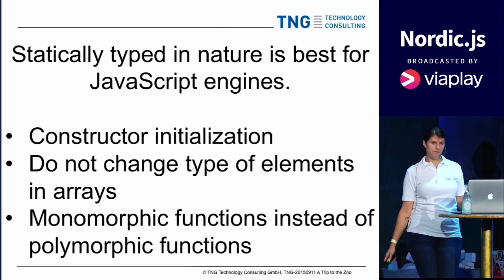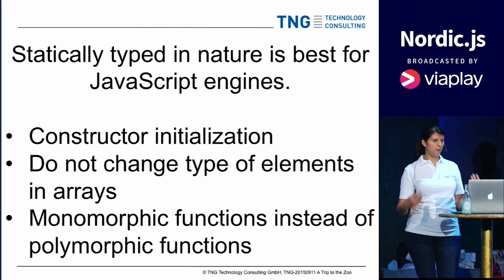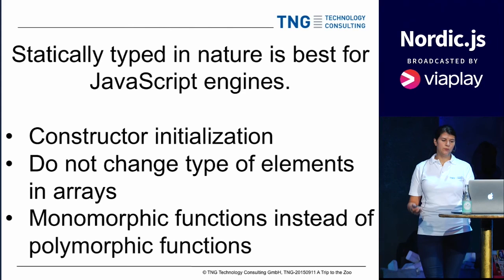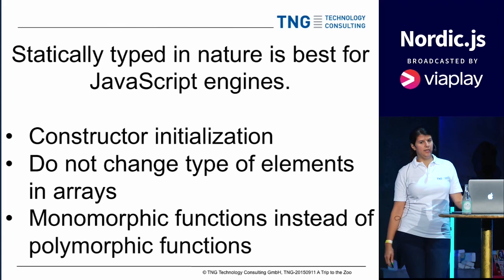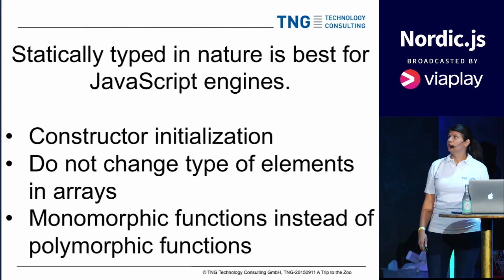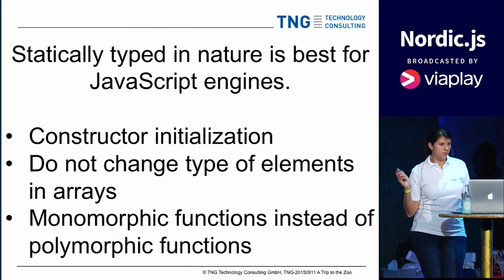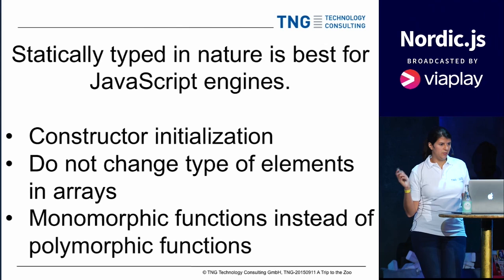To summarize: JavaScript nowadays is almost as fast as native C++ code, which is really amazing because JavaScript is dynamically typed — the compiler doesn't know ahead of time what will happen. What it relies on heavily are hidden classes and inline caching. The engines work best if your application is basically static in nature. So yes, it's still a dynamically typed language, but if you do initializations in the constructor, do not change the type of elements in your array, and especially use monomorphic functions instead of polymorphic functions, you can benefit from all this speedup. Thank you very much.